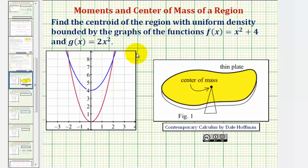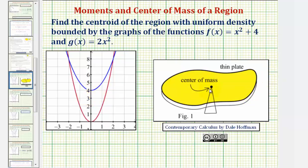To understand what we're finding when we find the centroid or center of mass, we can think of this bounded region as a thin plate or a planar lamina with uniform density. Looking at the image here on the right, this point is the center of mass or centroid of this thin plate with uniform density, because at this point the thin plate balances.